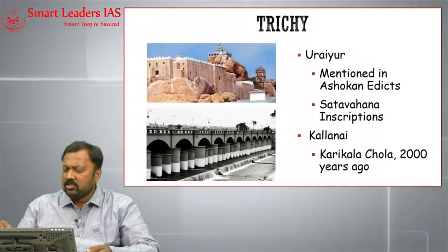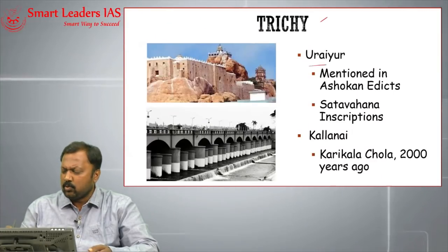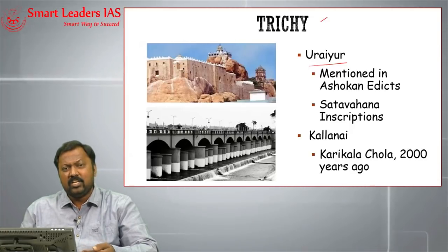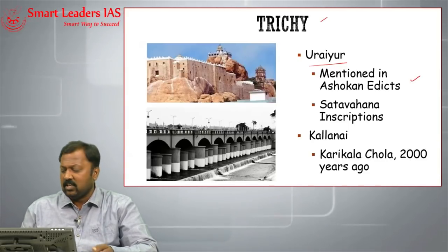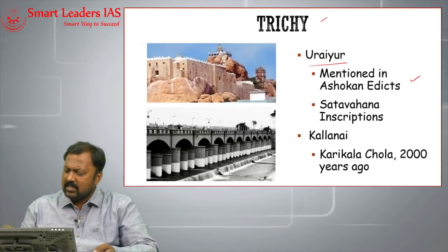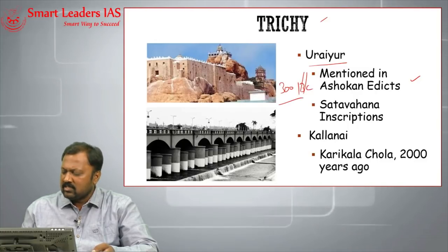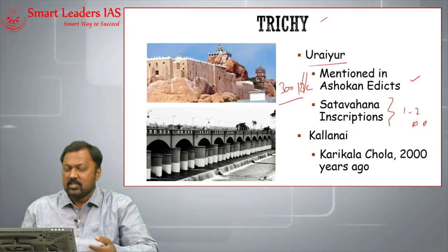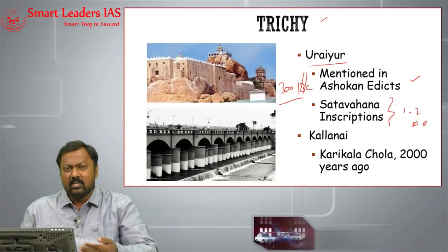Tiruchi is a very important centre. Near Tiruchi is a place called Urayur — a pre-historic site mentioned even in Ashokan edicts (approximately 300 BC) and in Satavahana inscriptions (1st–2nd century AD). This indicates that Urayur is a very old city, still located near Tiruchi.